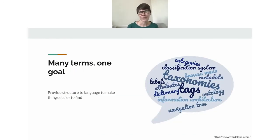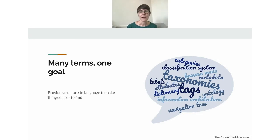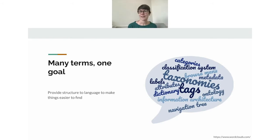There are a lot of different terms you might encounter in this space: ontology, knowledge graph, categories, metadata. The biggest ones I use are probably taxonomies and tags, and you'll hear me use those most today. All these terms have technical differences, but they all work toward the same goal — providing structure to language to help you find what you're looking for more easily. I'll be using taxonomies and tags mostly interchangeably.